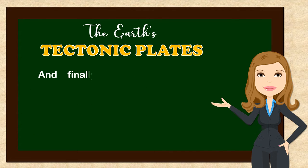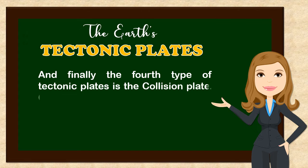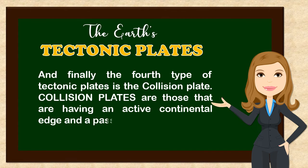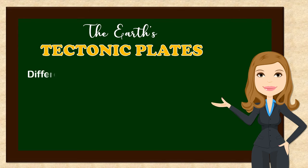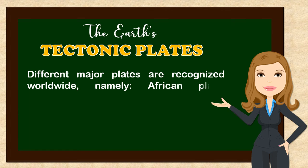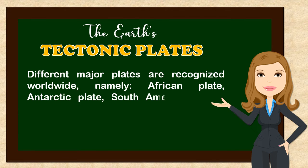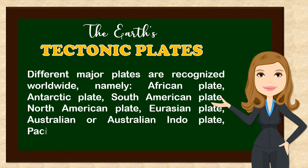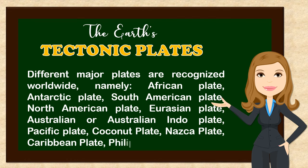And finally, the fourth type of tectonic plates is the collision plate. Collision plates are those that have an active continental edge and a passive one. Different major plates are recognized worldwide, namely: African plate, Antarctic plate, South American plate, North American plate, Eurasian plate, Australian or Indo-Australian plate, Pacific plate, Cocos plate, Nazca plate, Caribbean plate, Philippine plate, and many others.